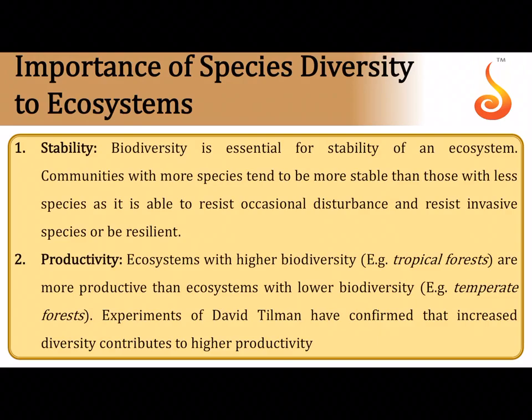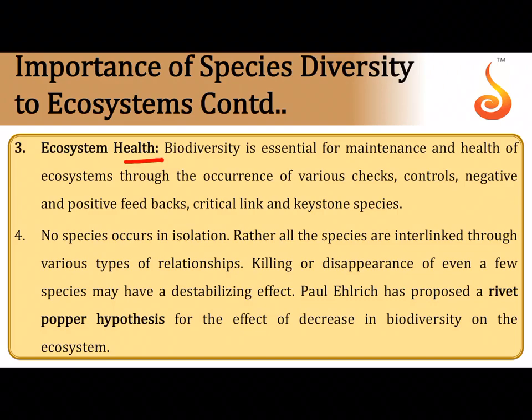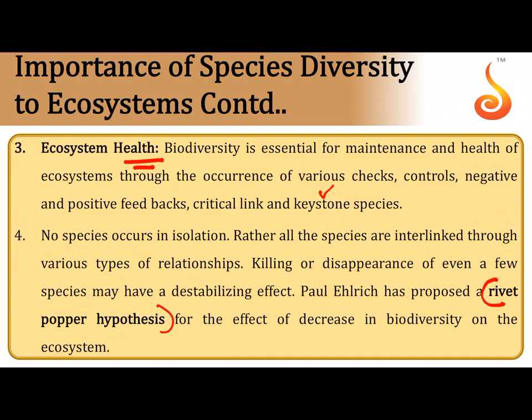Biodiversity is essential for ecosystem stability — the more the biodiversity, the more stable the ecosystem. Biodiversity is also important for productivity: green plants synthesize organic matter, maintaining the health of the ecosystem. Keystone species are crucial links — if something happens to a keystone species, ecological balance is lost. The rivet popper hypothesis explains that it is not just about species loss itself, but about the rate of species loss and the loss of particular keystone species.